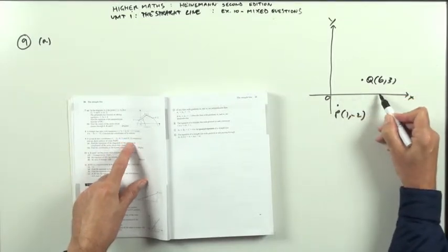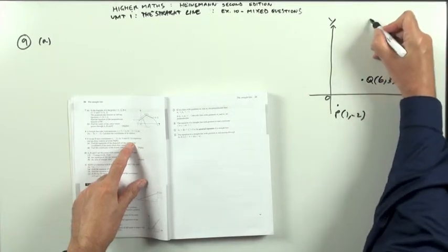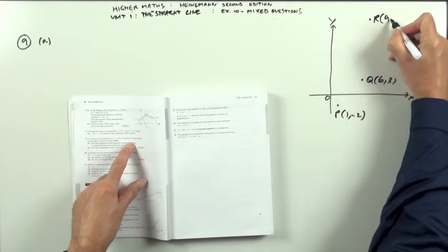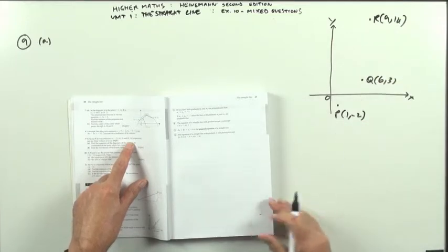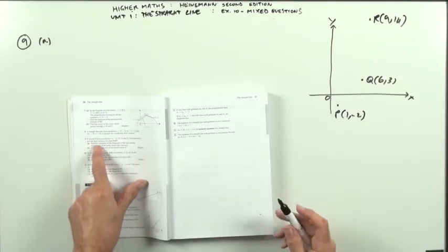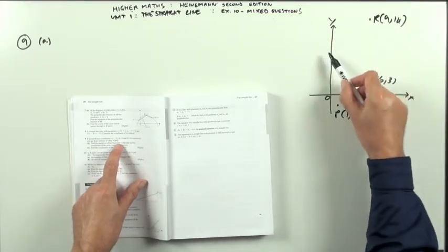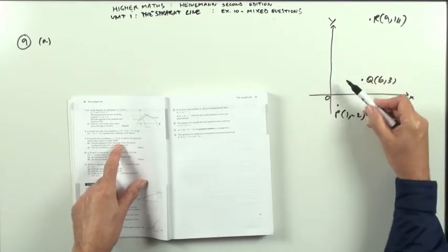And R is the point (9, 14). It says those are three vertices of the kite P, Q, R, S. So there's a point S over here somewhere.